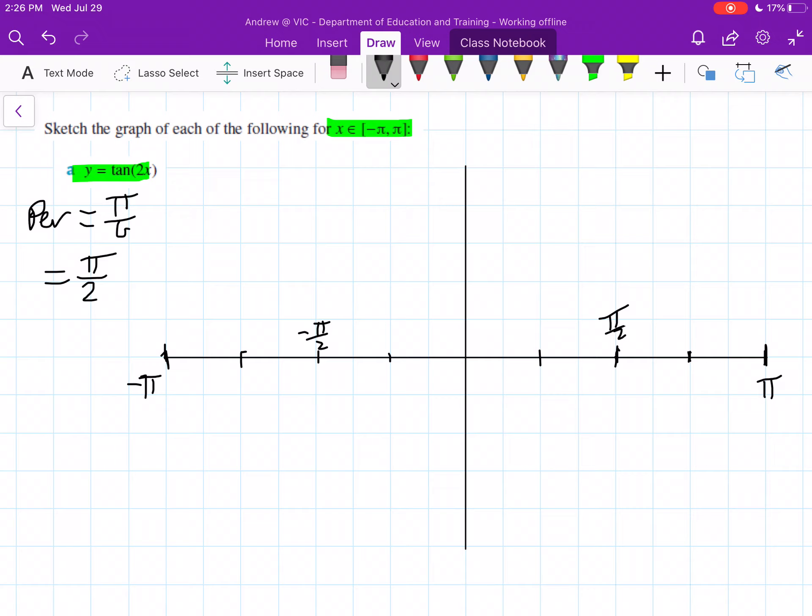Secondly, we have another bit of information - we need to find our asymptotes because these look a bit different. So our x asymptotes, and this is where it starts. The equation for this is,